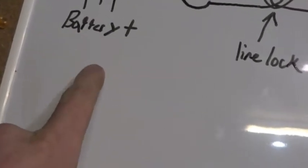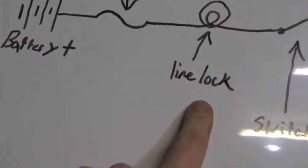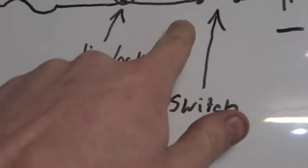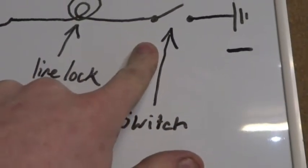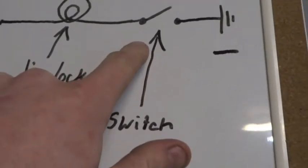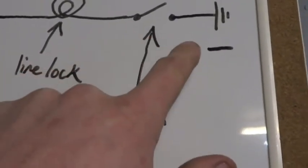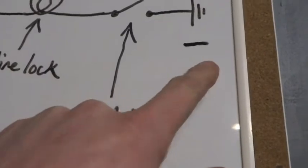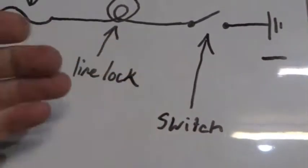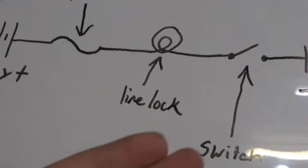We're going to run from the battery to a fuse to the line lock. And then from the line lock, we're going to run inside the cab to a switch I have mounted by my steering wheel. From that switch, it's going to go on the other side of the switch, it's going to go straight to ground. So when you pop the switch on, it turns the line lock on. Magic.